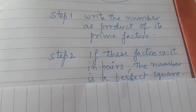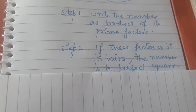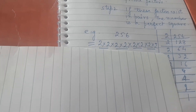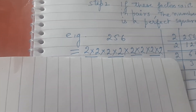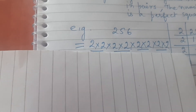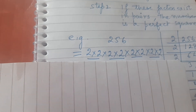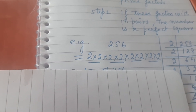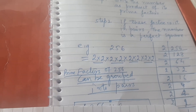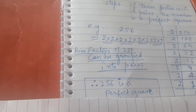Let us understand this with an example. Consider the number 256. When we find the prime factors of 256, it can be expressed as 2 × 2 × 2 × 2 × 2 × 2 × 2 × 2. Observe carefully that all these factors can be grouped into pairs. This means 256 is a perfect square.